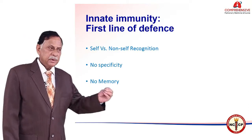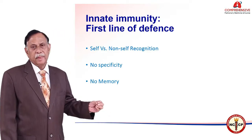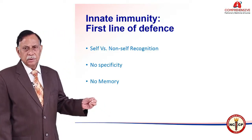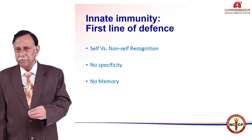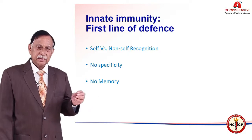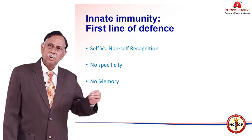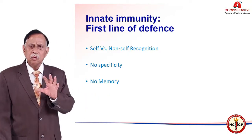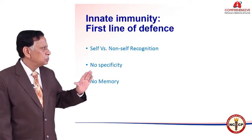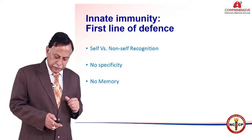If one person gets infection with some particular organism, they get pneumonia or allergy. But a second time, it also produces the same reaction in somebody else. There is no recognition, no memory, and no specificity in innate immunity.